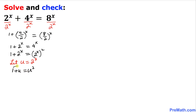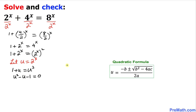Let's move all these terms to the right hand side. So we are going to get u squared minus u minus 1 equal to 0. And we can see that this is a quadratic equation in standard form, so therefore we are going to use the quadratic formula to solve this equation.